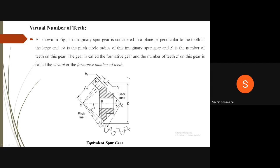Here, A0 is the cone distance, HA is the addendum, HF is the dedendum, gamma is the pitch angle, D is the pitch circle diameter at the large end, O is the apex point, and RB is the pitch circle radius of the imaginary spur gear.